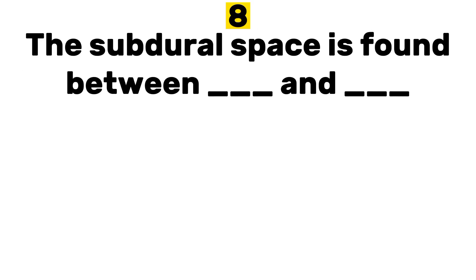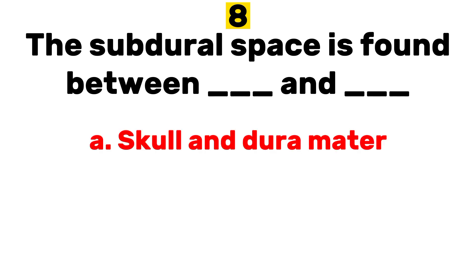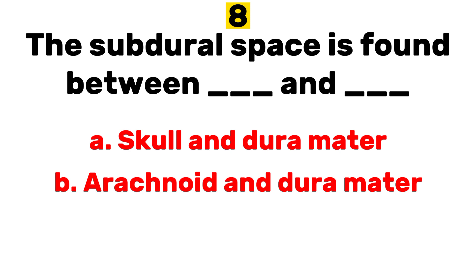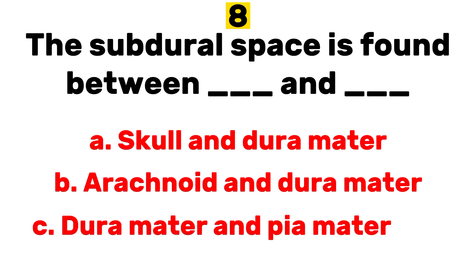Number 8. The subdural space is found between: A. Arachnoid and Cortex. B. Arachnoid and Dura mater. C. Dura mater and Pia mater. Answer: B. Arachnoid and Dura mater.